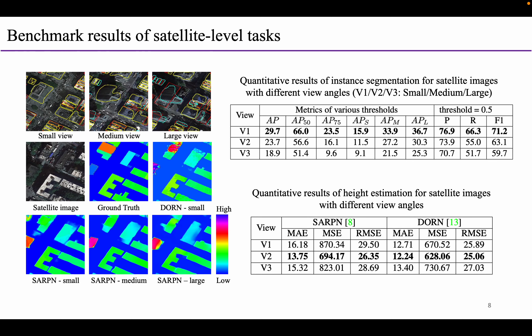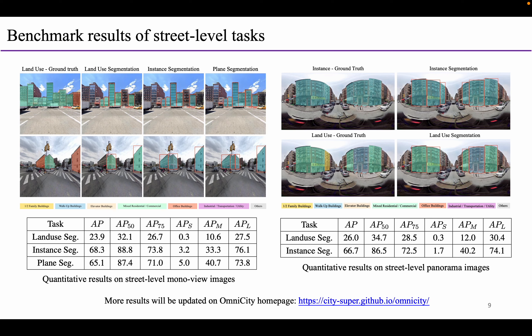In our experiments, we provide a variety of benchmarks for multiple satellite and street-level tasks. The satellite-level tasks include building footprint segmentation and height estimation, which are conducted on the satellite images of three view angles. We select Mask-RCNN as the baseline method for these segmentation tasks. For the street-level tasks, we conduct land use, building instance, and plane segmentation tasks on the mono-view images, and conduct land use and building segmentation tasks on the panorama images. Please note that these are only preliminary experimental results on the Omnicity dataset. More benchmarks of latest models and additional tasks will be updated on the Omnicity homepage.